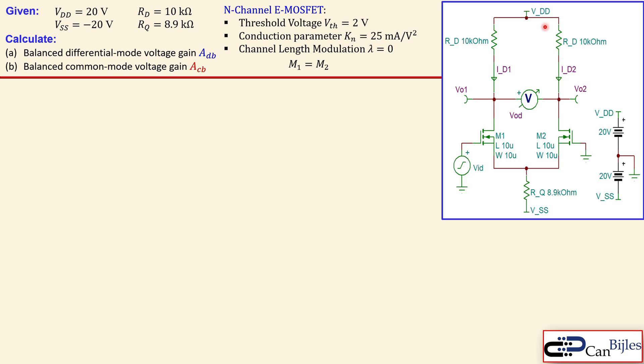Let's look at our example. We have this circuit with two DC voltage sources VDD and VSS. The values are shown here and we have two resistors which are equal, RD drain resistors. We have two n-channel enhancement MOSFETs which are matched, so M1 equals M2, and they have a threshold voltage of 2 volts, conduction parameter of 225 milliamps per square volt, and channel length modulation lambda is zero. We would like to calculate the balanced differential mode voltage gain and the balanced common mode voltage gain, then compare them together as a ratio for common mode rejection ratio.